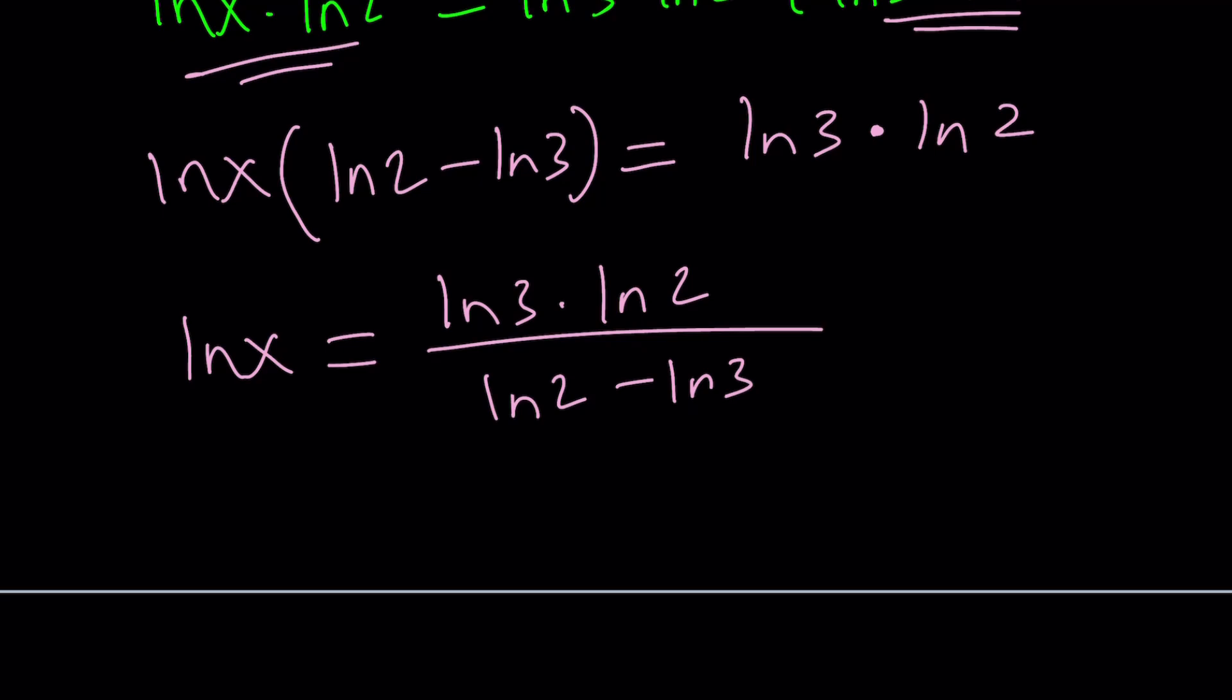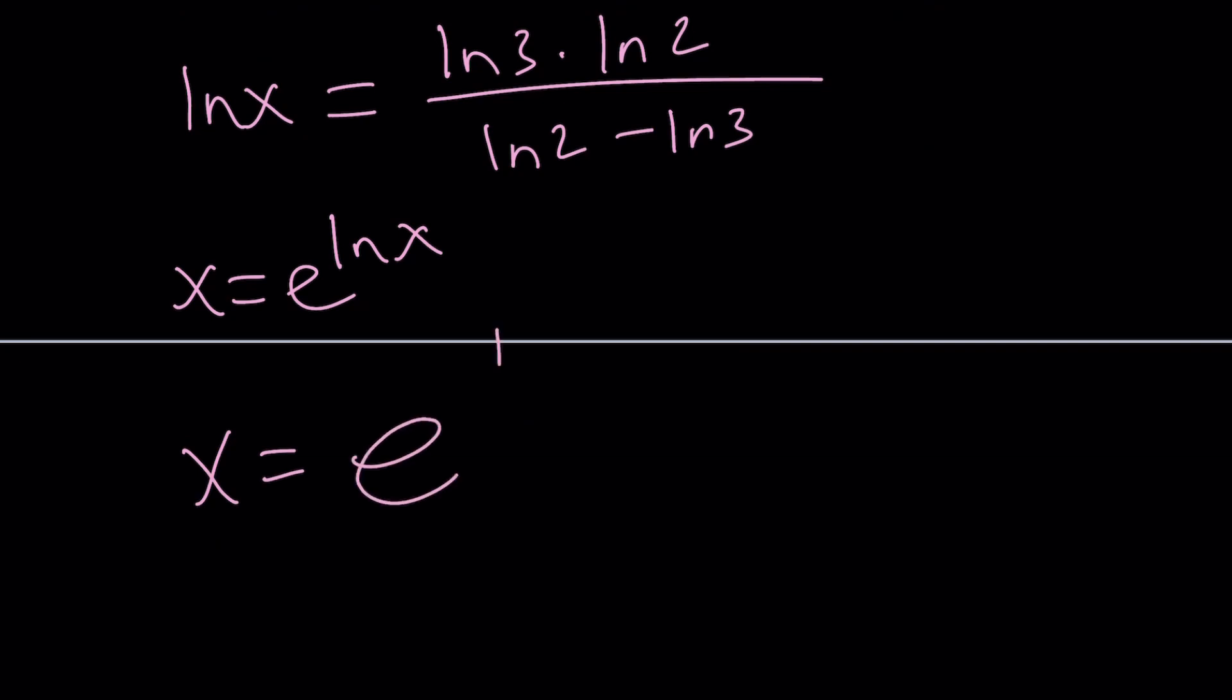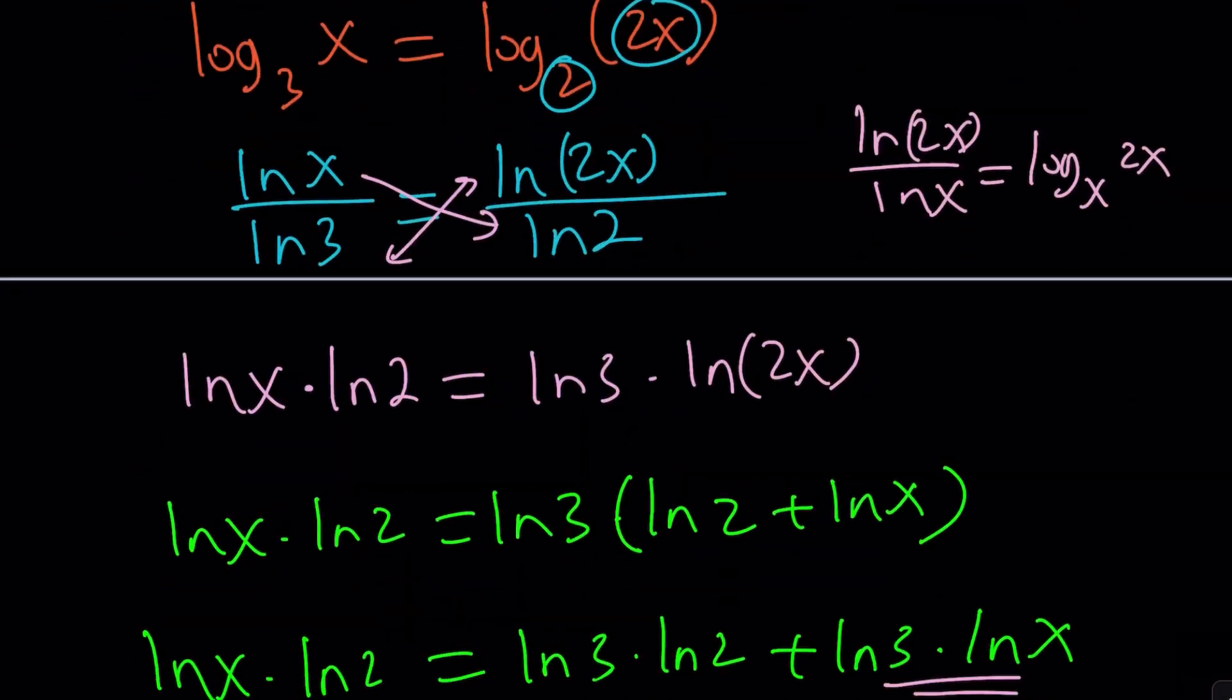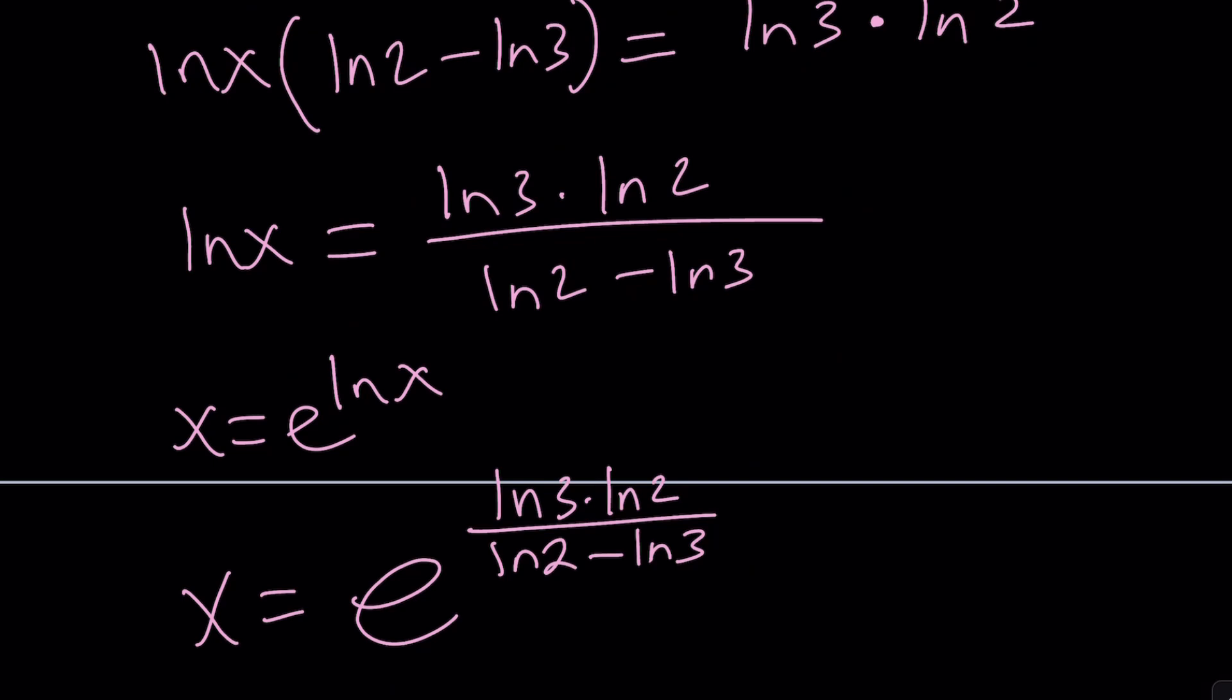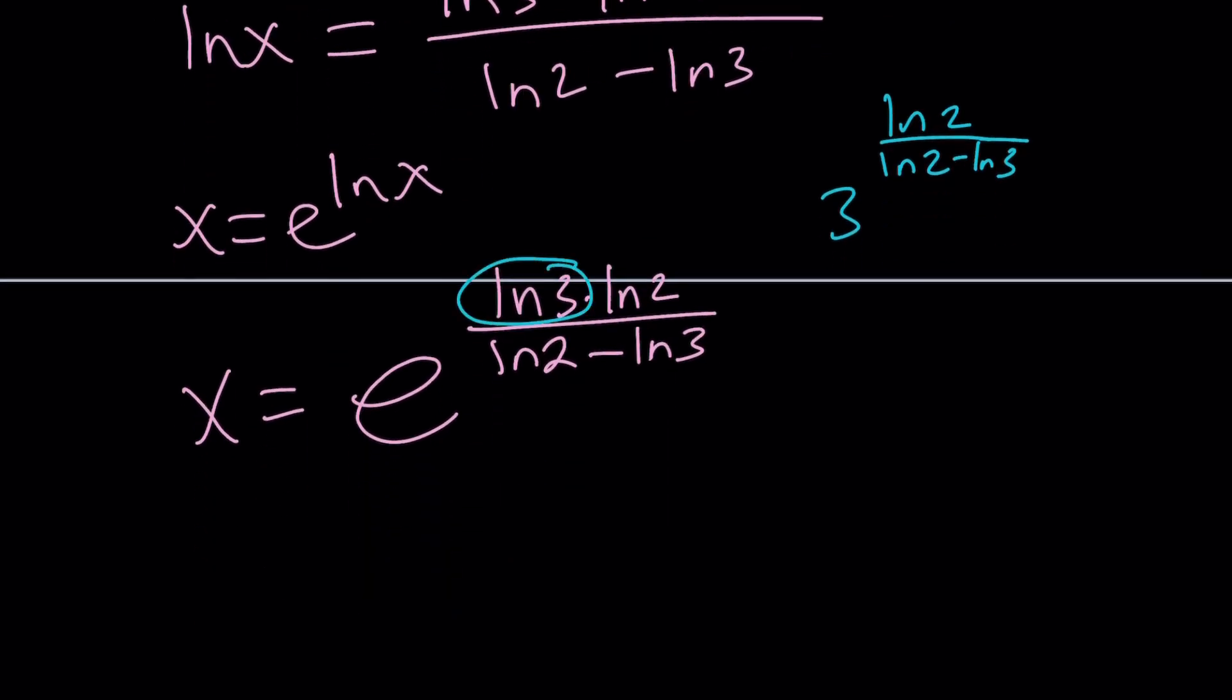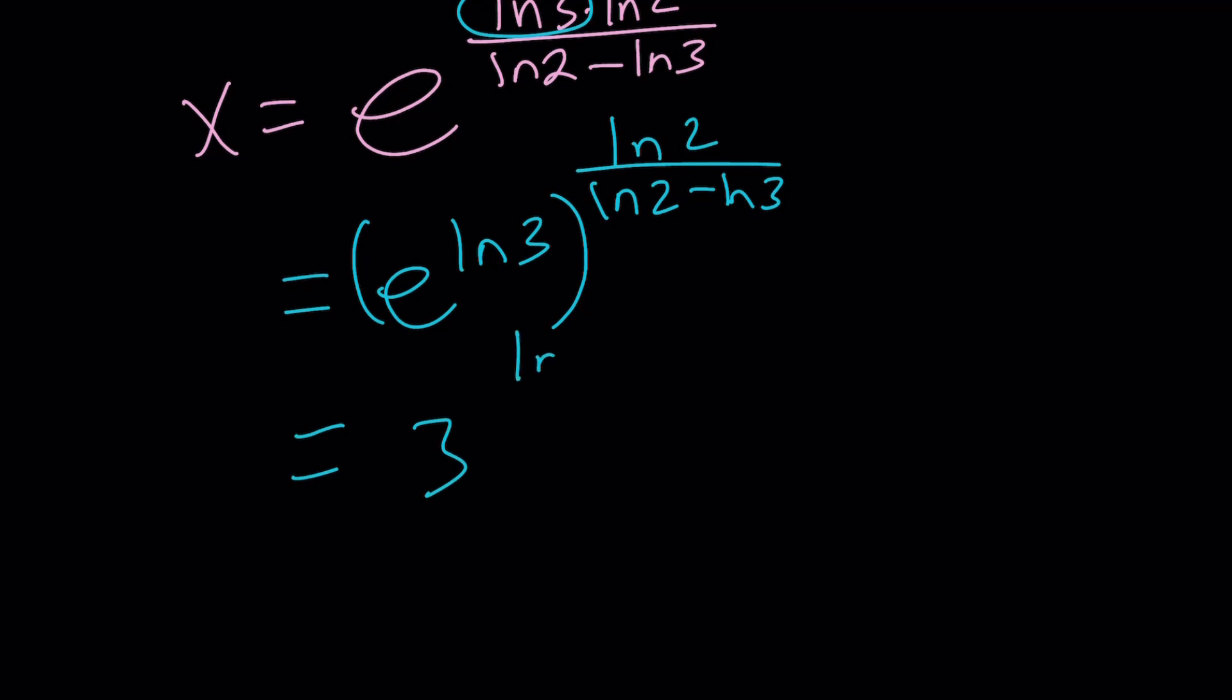That's going to give us something similar. But this is ln(x). To get x, you're going to do e to the power ln(x). So x equals e to the power ln(3) times ln(2) divided by ln(2) minus ln(3). Our first answer was 3 to the power ln(2) over ln(2) minus ln(3). How are they equal? Well, they are. You can put this e to the power ln(3) inside. E to the ln(x) is x, so e to the ln(3) is 3. And you get the exact same answer.